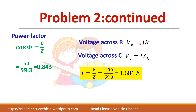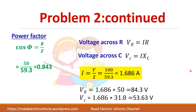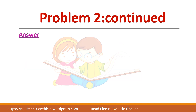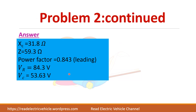First find the current I, which equals V by Z. V is 100 volts divided by impedance 59.3 ohms, giving I equal to 1.686 amperes. From this you can find Vr and Vc. So we get the voltage across the resistor and the voltage across the capacitor. These are the final answers.